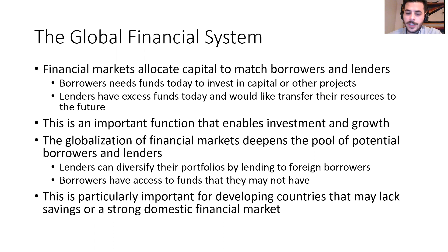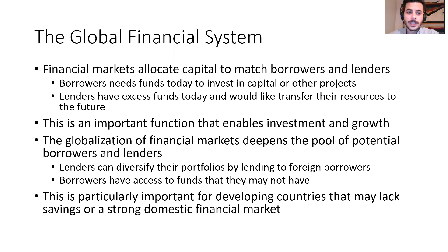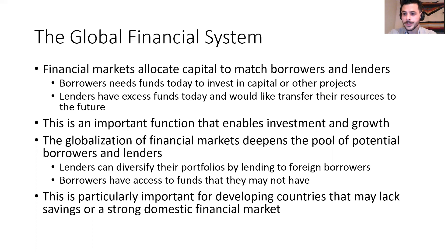The fundamental purpose of the financial system and financial markets is to allocate capital between borrowers and lenders. Borrowers have some reason for needing funds today — they have projects they would like to invest in, capital they would like to purchase so they can produce tomorrow. Lenders have excess funds today; they have too many resources today and not enough tomorrow, and they'd like some way of transferring those resources from today to tomorrow. The solution is to match lenders and borrowers, so lenders can lend their excess funds and get back a little bit more tomorrow, while borrowers now have the funds they need today to buy capital or invest in projects.